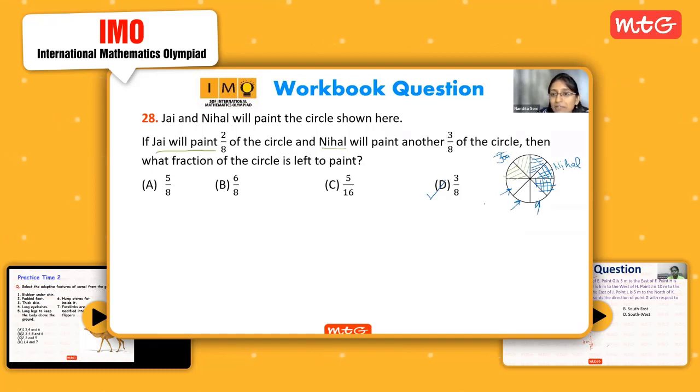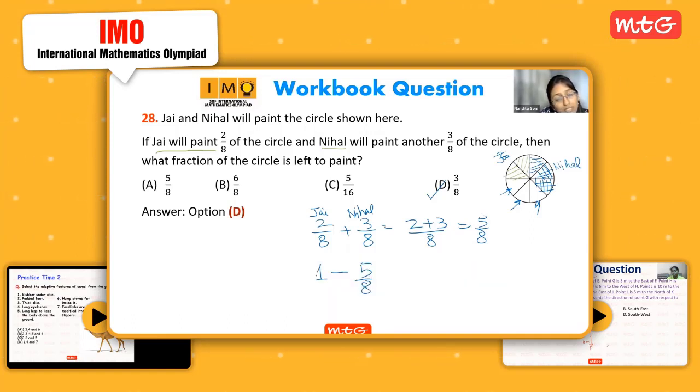Now in case the picture is not given, we use the addition method. Jai painted this much, Nihal painted this much, so total painted by them is this. When it says what fraction of the circle is left, I will do one whole minus 5/8. This one I can change to 8/8, so we can do this calculation also.